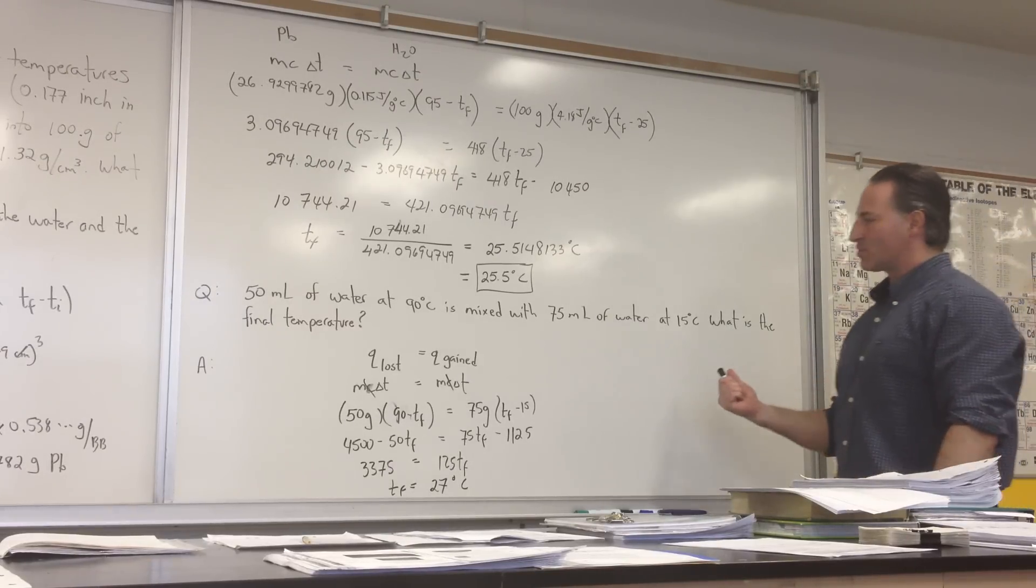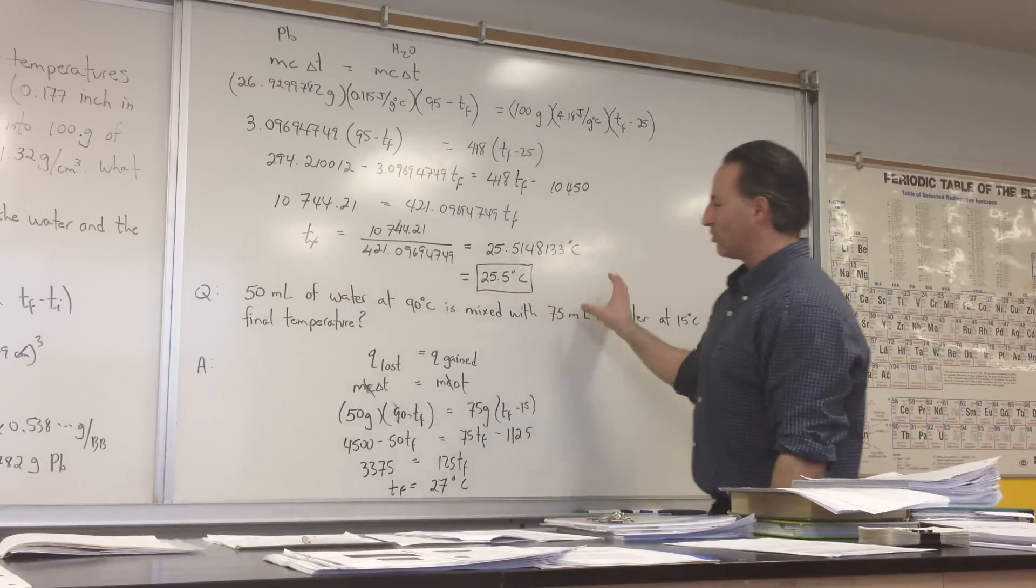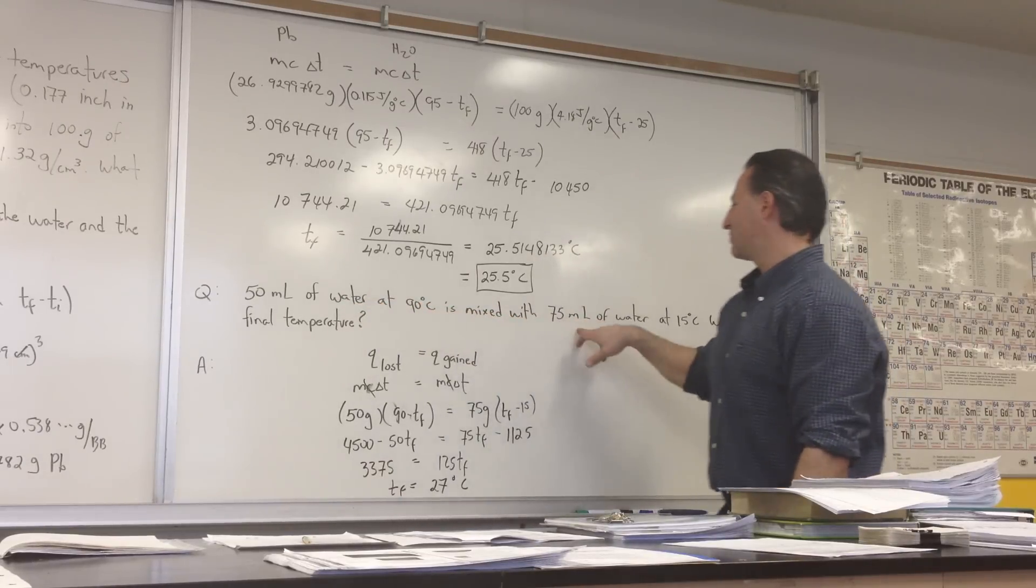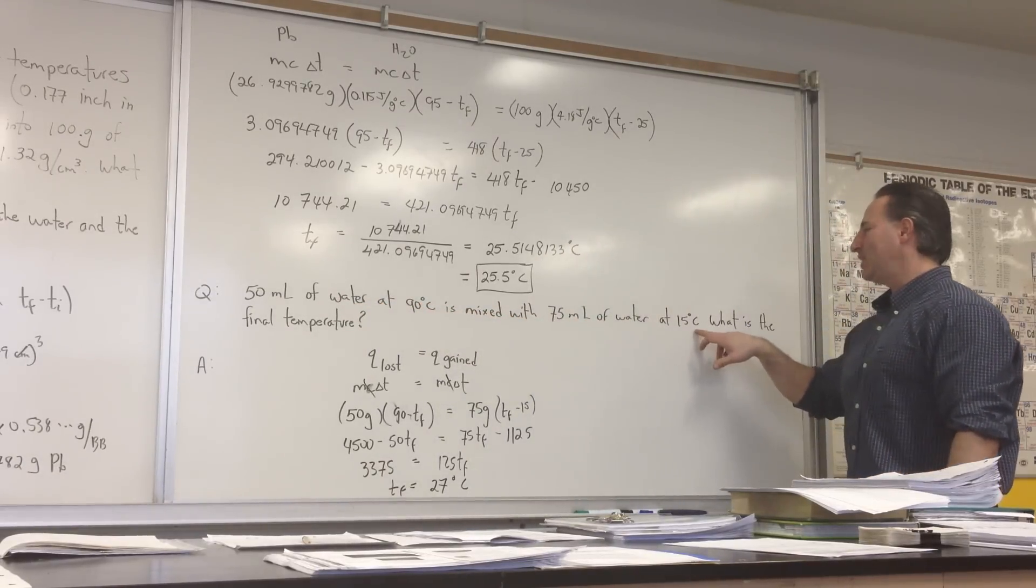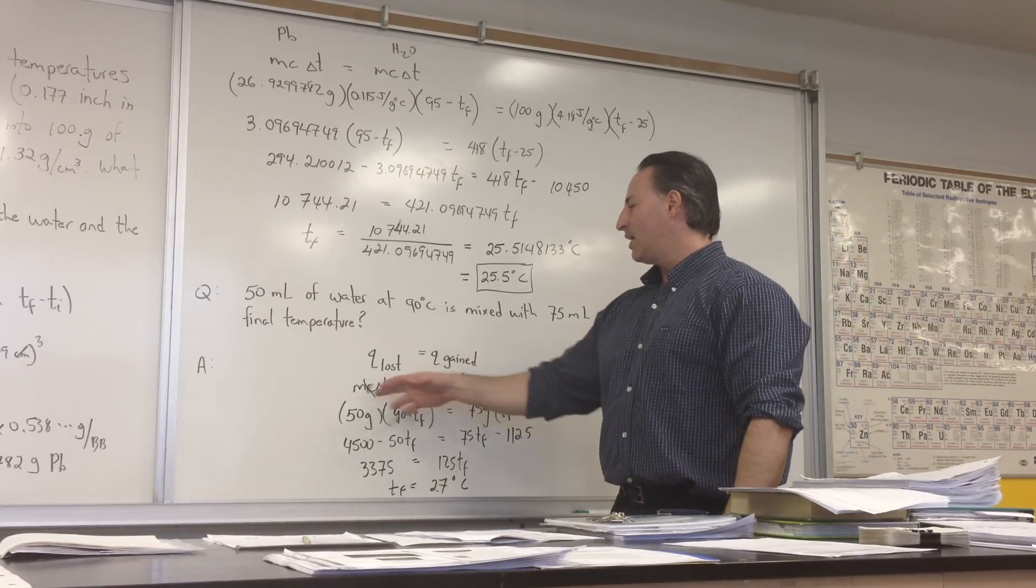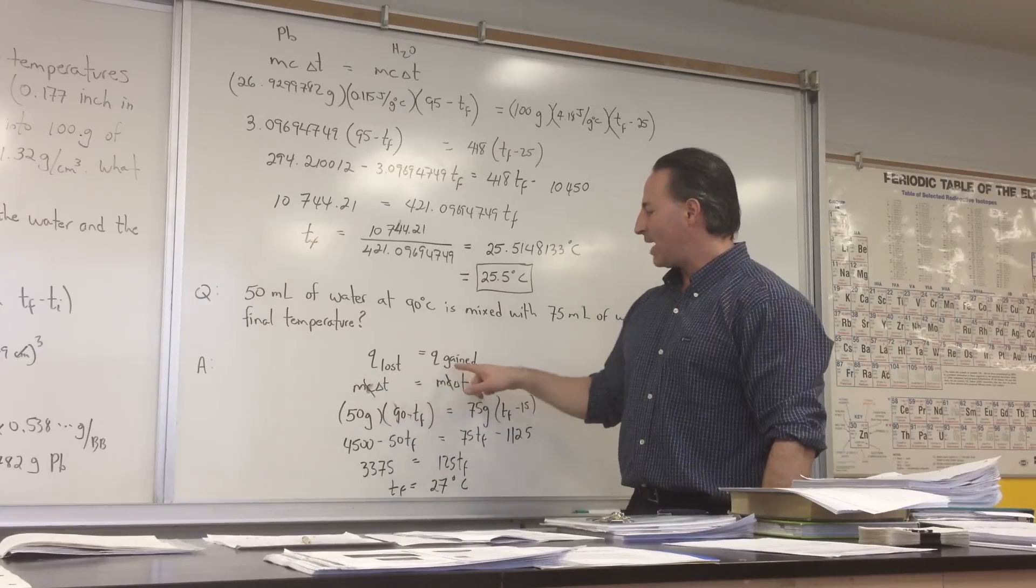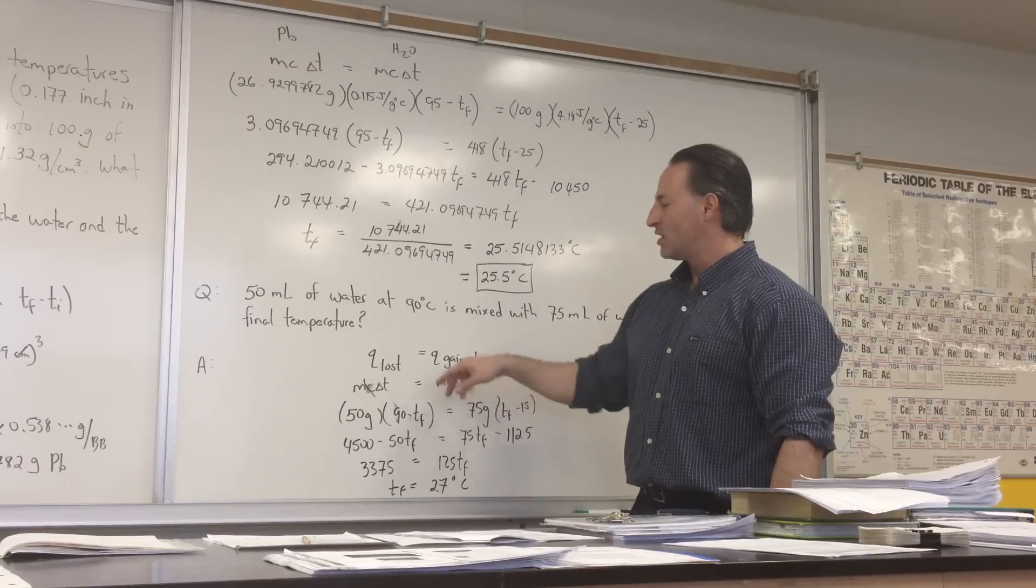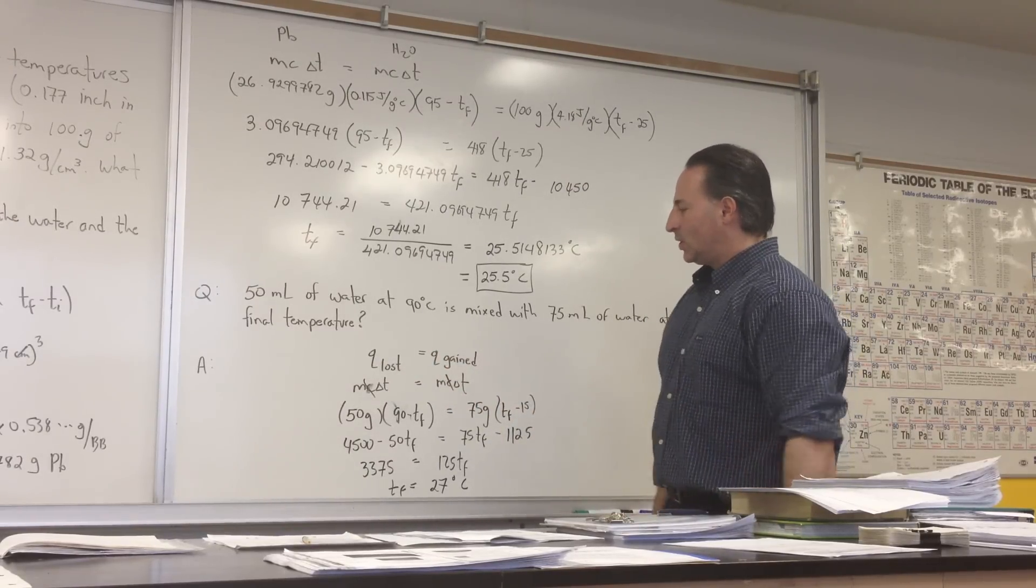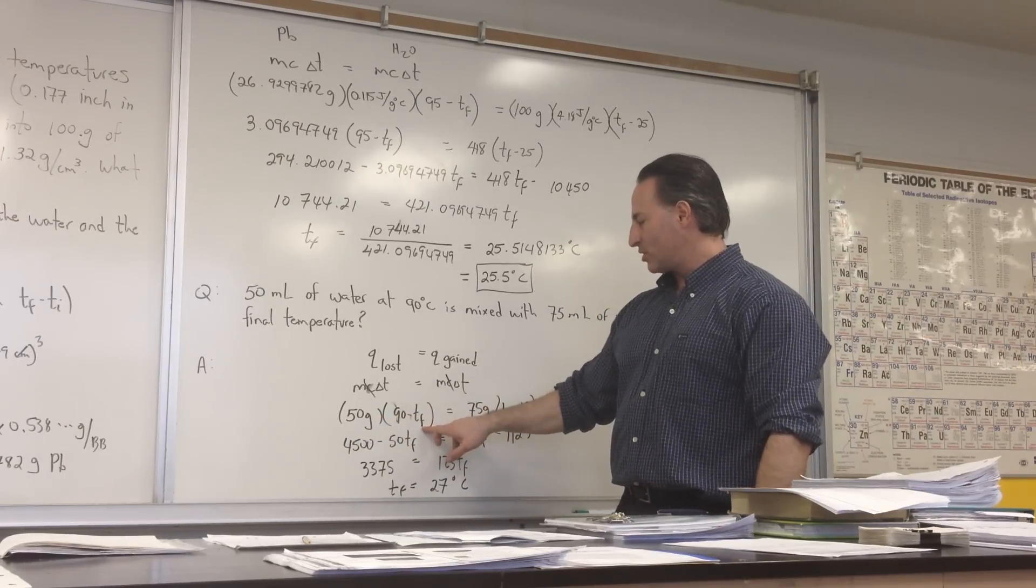The second version of this question is a little easier, because I use water in both sections. So we use the same equation. We have 50 ml of water at 90 degrees, and it's mixed with 75 ml of water at 15 degrees. What is the final temperature? So we say Q loss is equal to Q gained again. MC delta T is equal to MC delta T. Because we're using water in both sides of the equation, the heat capacity is the same on both sides. So I've just cancelled the C, and it simplifies the calculation for us. So 50 grams of water times the initial temperature of the hot water, minus the final temperature, which we don't know.